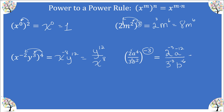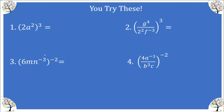Now let's keep simplifying. Two to the negative three flips to the bottom giving a value of eight. A to the negative twelve flips to the bottom and becomes a to the positive twelve. In the denominator, three to the negative three flips to the numerator and multiplying it by itself three times gives us 27. And b to the negative six flips to the top. All of these exponents were negative so they flip to the opposite side of where they started. Now pause the video and come back and we'll go over these together.